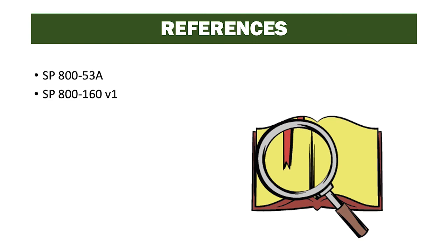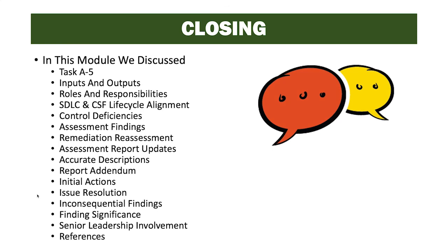References for this task include Special Publication 800-53A and Special Publication 800-160 Volume 1. In this module, we discussed Task A5, its inputs and outputs, roles and responsibilities, SDLC and CSF alignment, control deficiencies, assessment findings, remediation, reassessment, assessment report updates, accurate descriptions, the report addendum, initial actions, issue resolution, inconsequential findings, finding significance, and senior leadership involvement.